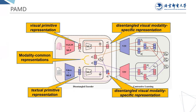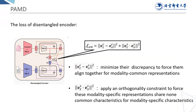We will now introduce the losses of the disentangled encoder. We decompose each modality into two distinct representations. To guarantee the resulting modality common and specific representations capture different aspects, we further apply constraints on the decomposed representations. Specifically, for modality common representations, we minimize their discrepancy to force them to align together. While for modality specific characteristics, we apply an orthogonality constraint to force these modality specific representations to share no common characteristics.